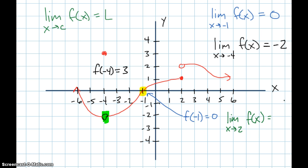That doesn't satisfy the definition of the limit we looked at in the last video. Since the values from each direction don't line up, the limit does not exist. An abbreviation we'll often use is DNE — does not exist.